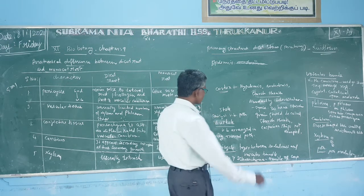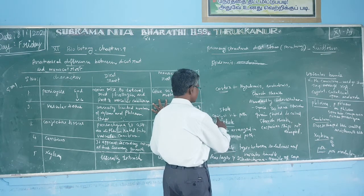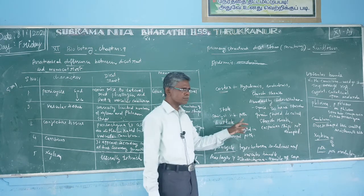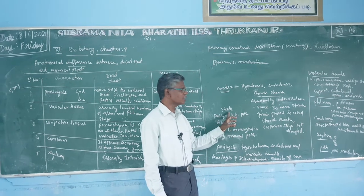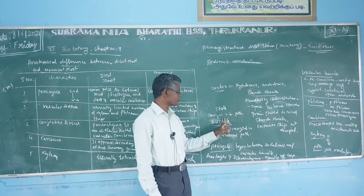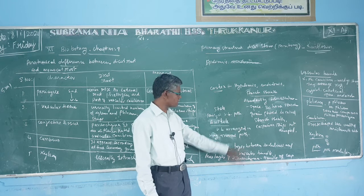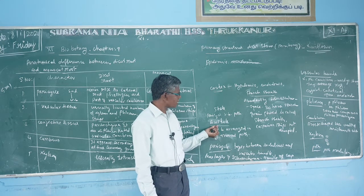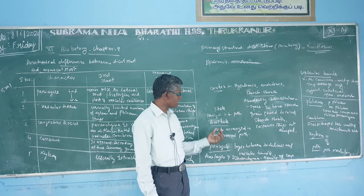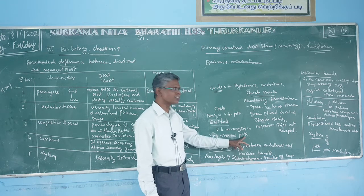The stele is a covering layer that includes pericycle, vascular bundle, and pith. The stele is enclosed within the endodermis. It is a monocorps template. A special type of stele present here is the eustele — where vascular bundles are arranged in a ring around the pith.